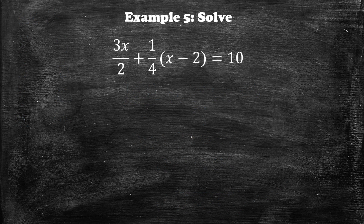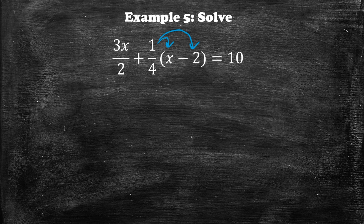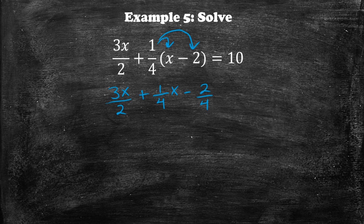Example number 5, we want to solve this equation. This is a combination of all the other equations we've solved so far. First, we simplify by distributing the 1/4 into both items inside the parentheses, giving us 3x over 2 plus 1/4 x minus 2 over 4 is equal to 10. Now we find the LCD between 2 and 4.